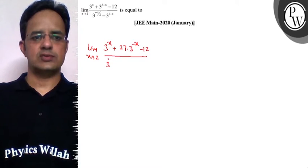Similarly, you have 3 raised to power minus x by 2, and we can write this as 3 multiplied with 3 raised to power minus x.